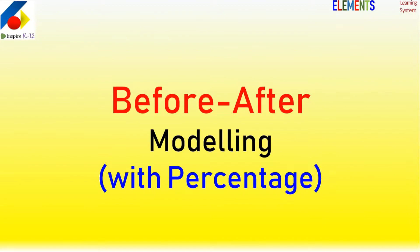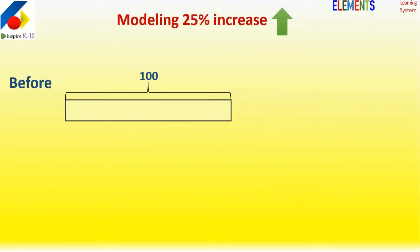Not exactly gain and loss, but percentage increase or decrease. For example, if there's a 25% increase in something, we will model it like this: before and after. If it was 100, the next will be 125, because 100...